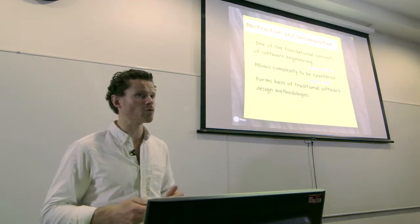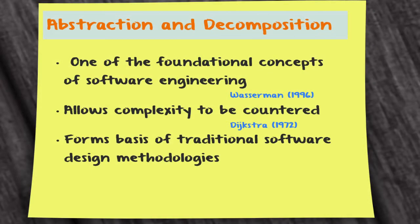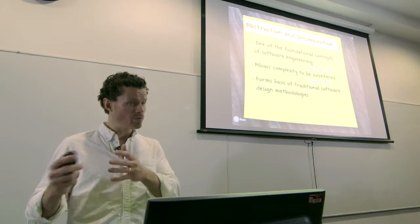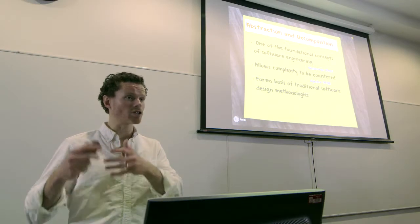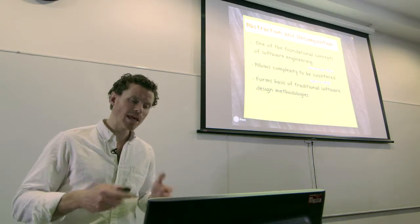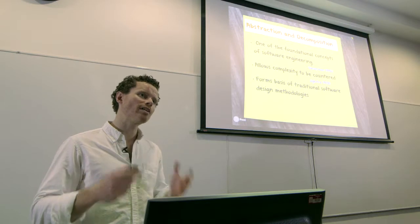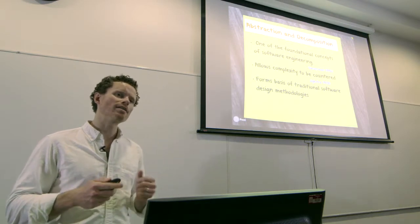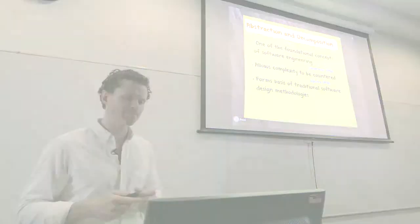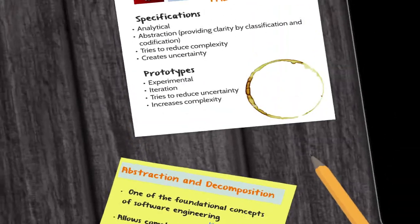We do have some tools at our disposal. The first is decomposition — the process where you take a problem and split it into its constituent parts. The second is abstraction — the process of communicating a problem on paper into specifications for those engineers. And those two concepts form the foundation of traditional software design and development. But that's really only one half of the coin.